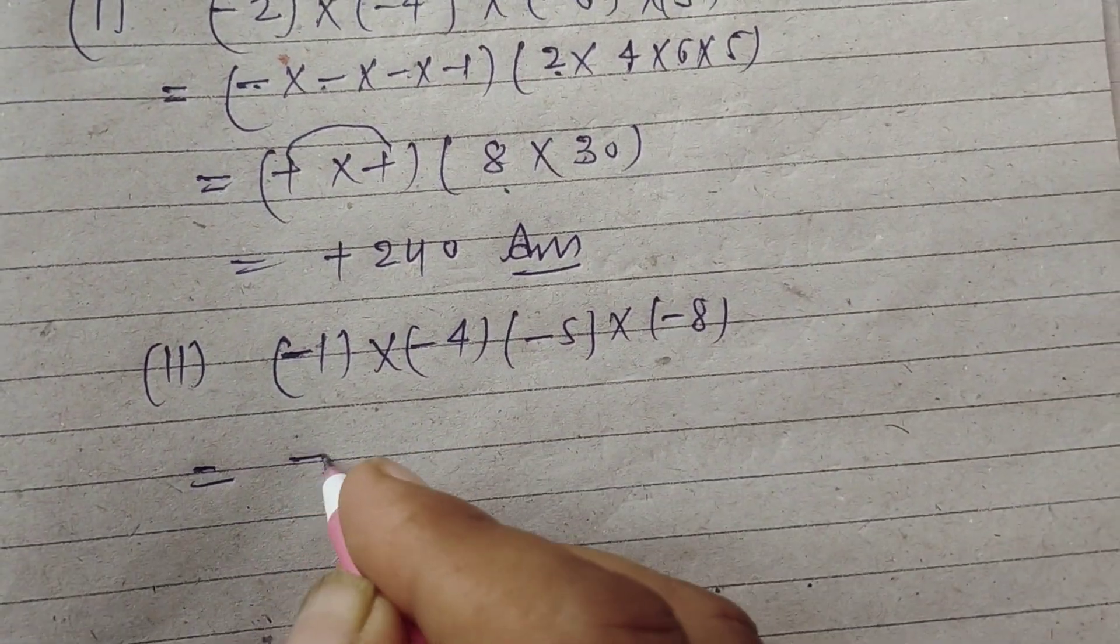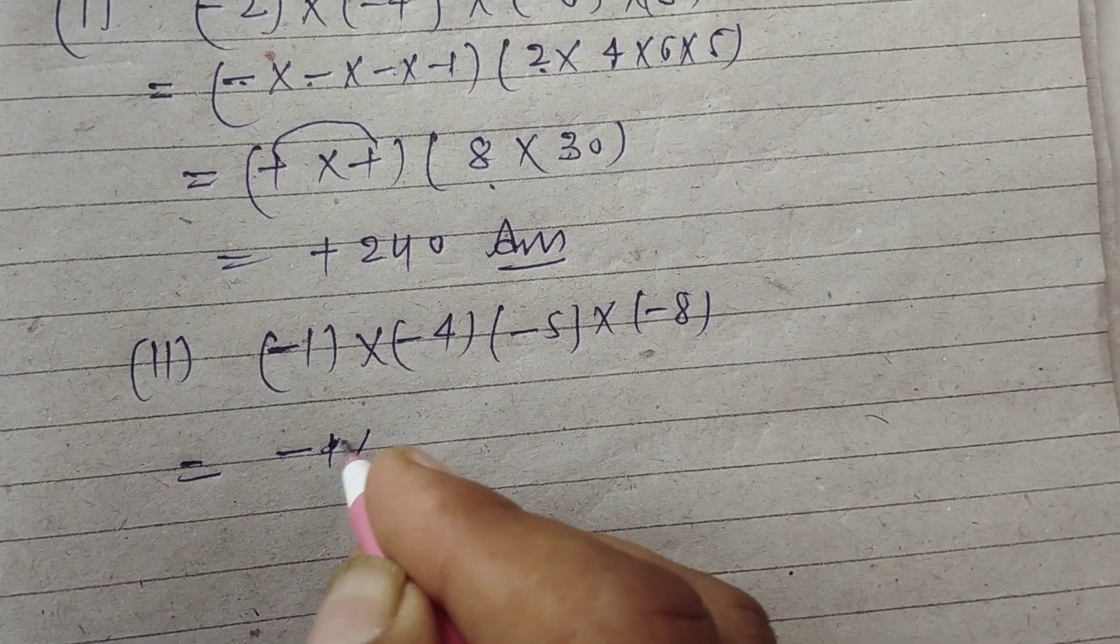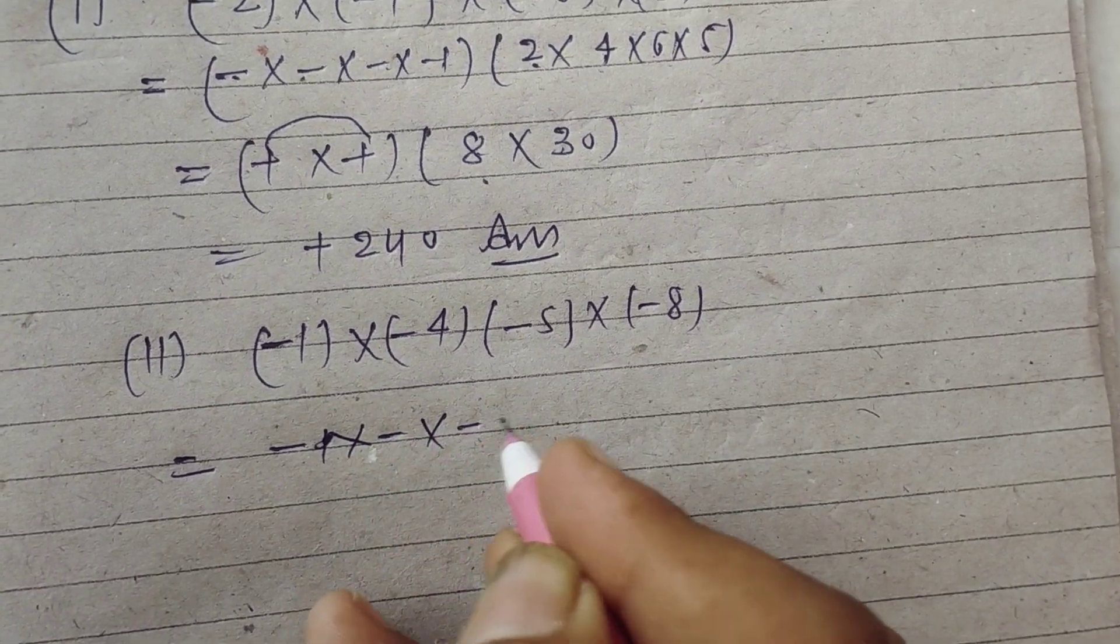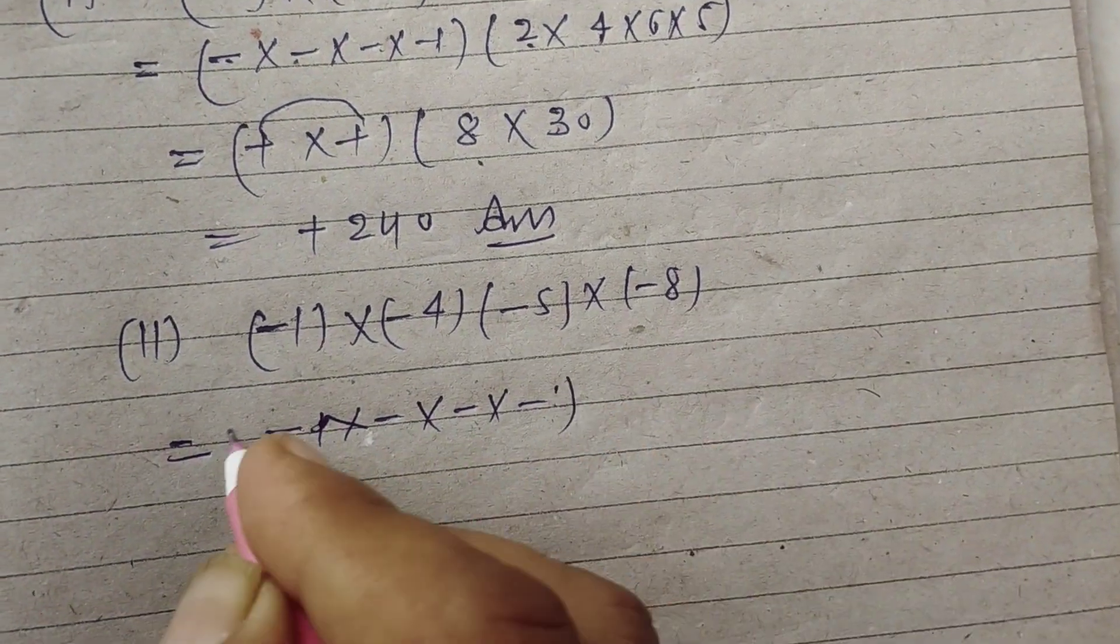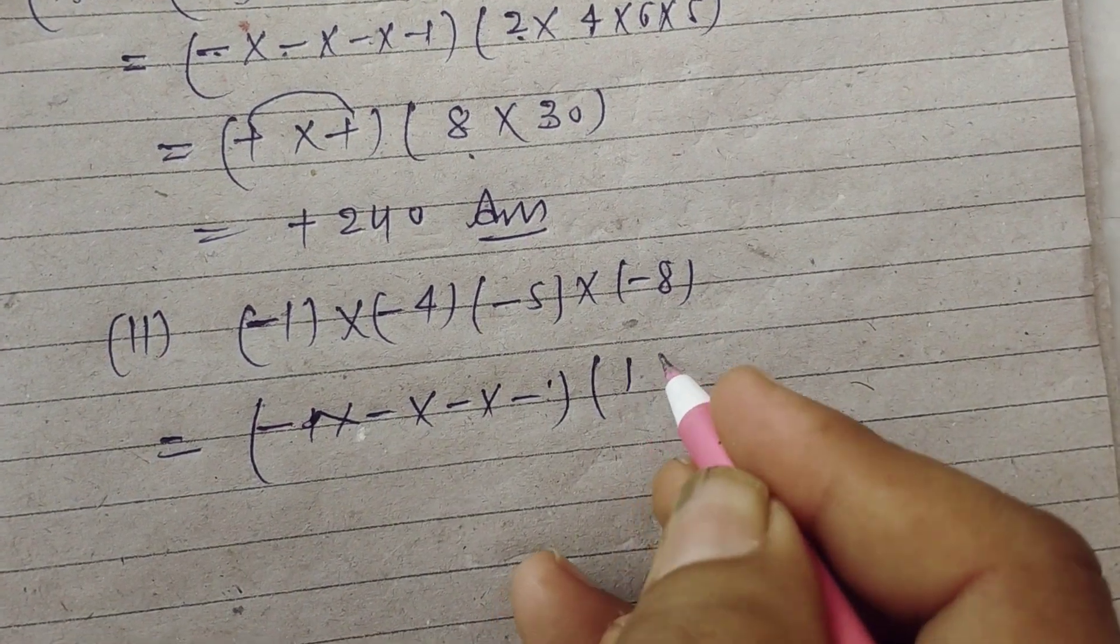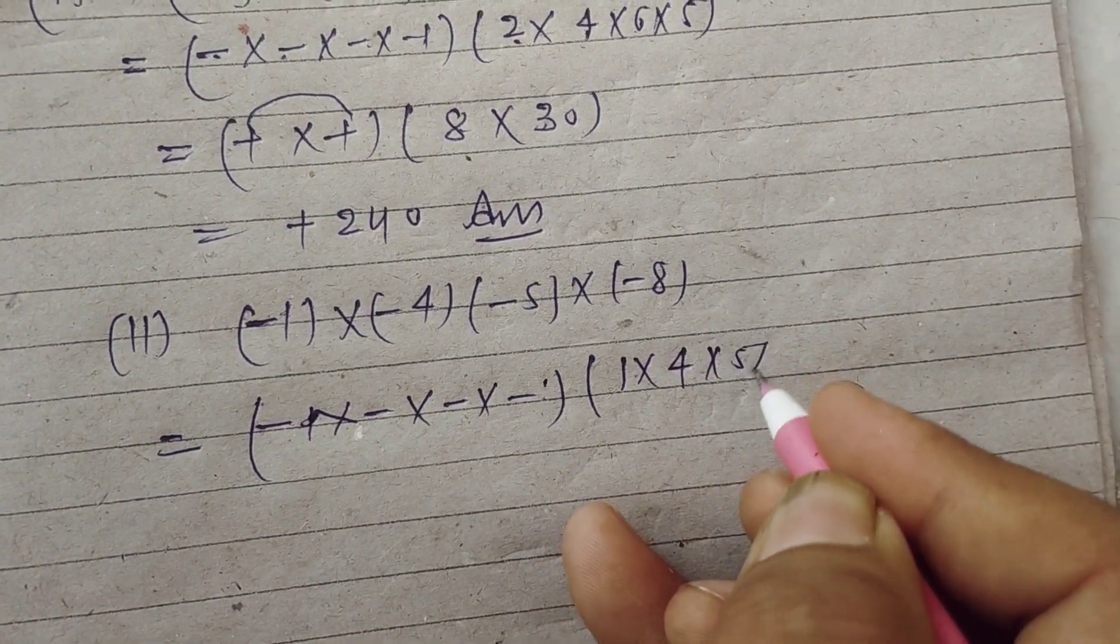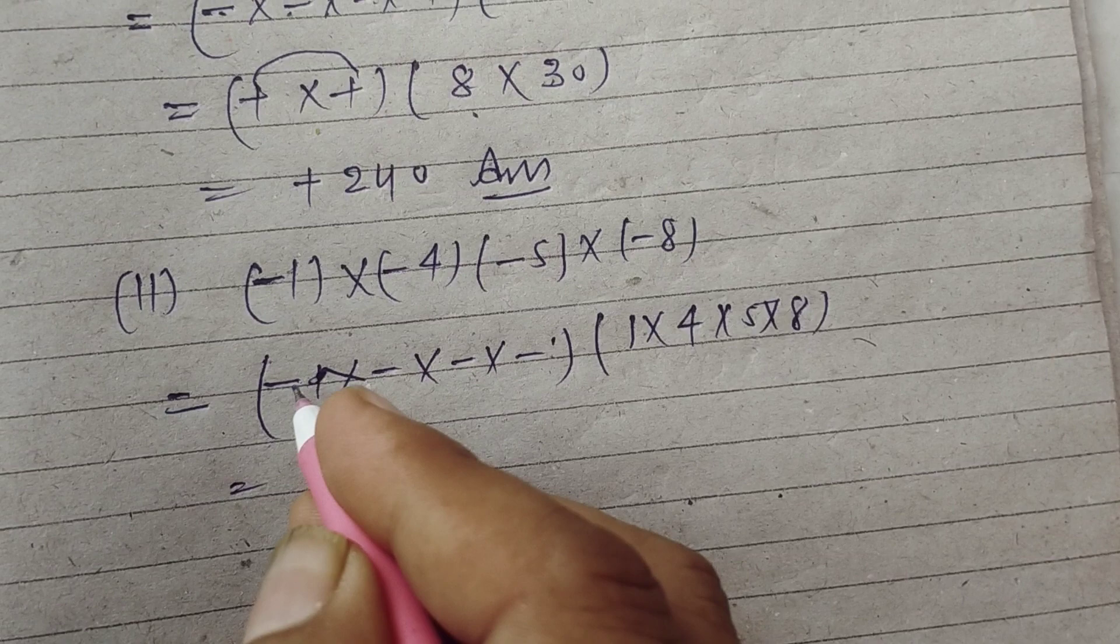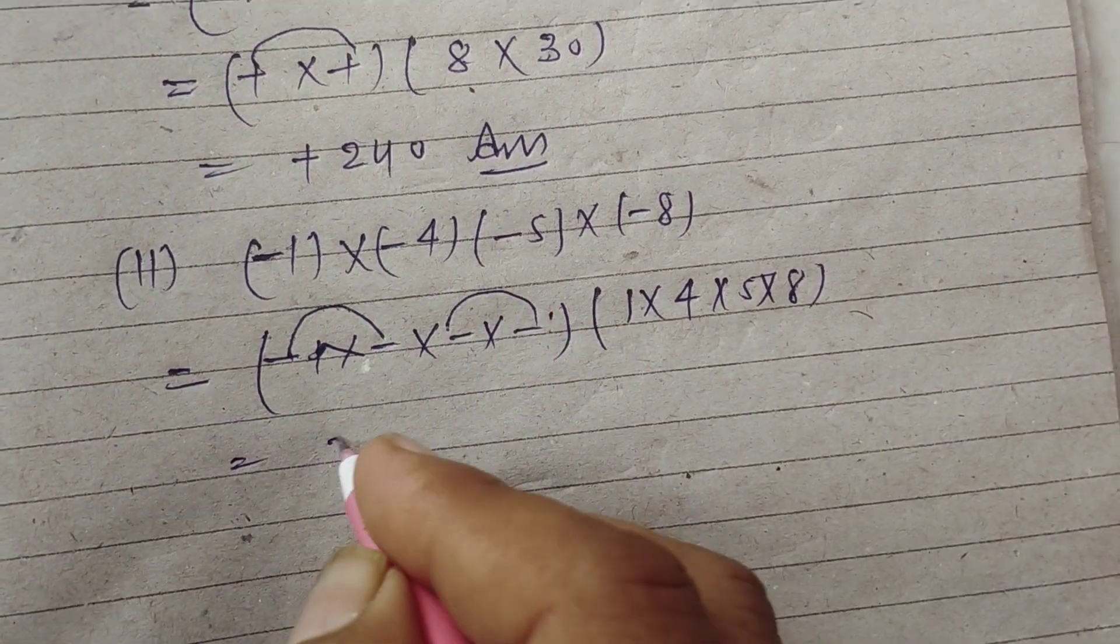we take the multiplication of signs first. Minus, minus, minus, minus - four times. And this is 1 × 4 × 5 × 8. So minus into minus is plus, minus into minus is plus.